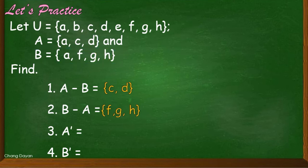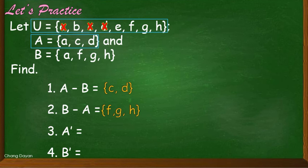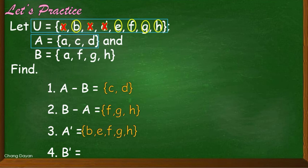Next, we have A prime, or the complement of set A. When you say complement of set A, we need to get the difference between the universal set and set A. We exclude the elements present in A: A, C, and D. The remaining elements are the answer, so A' equals B, E, F, G, H — these five elements can be found in the universal set but not in set A.